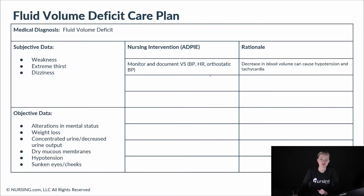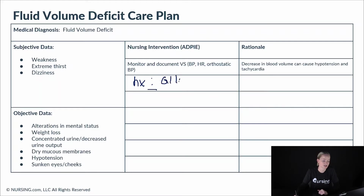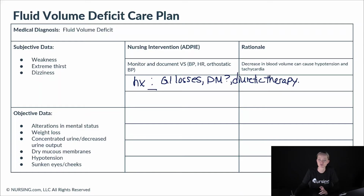Another thing we want to do is make sure we're getting a proper health history from the patient. Do they have such factors as GI losses? Are they diabetic? Are they on any sort of diuretic therapies that would cause them to be losing so much fluid?